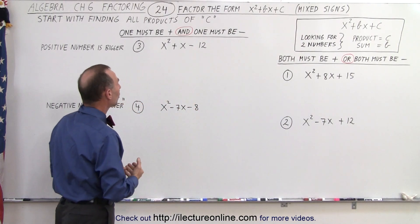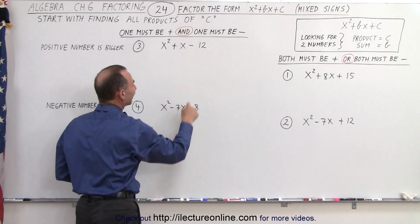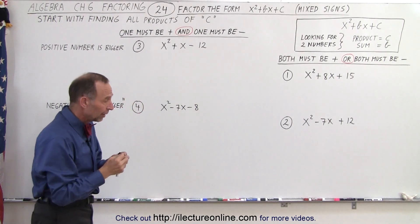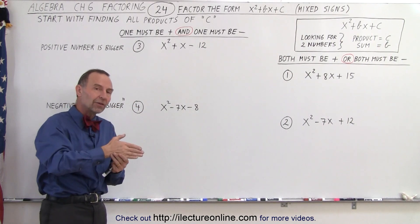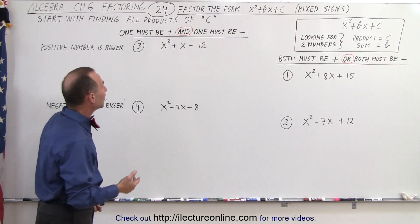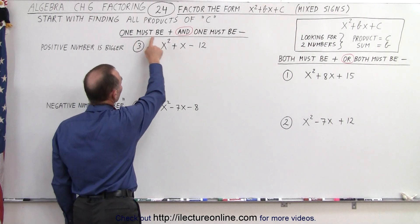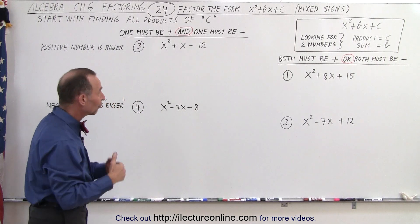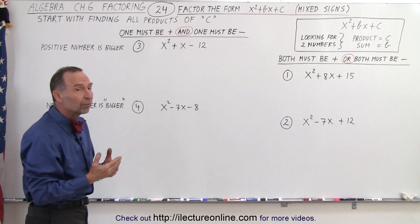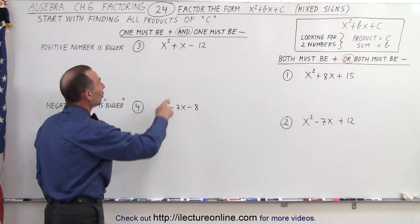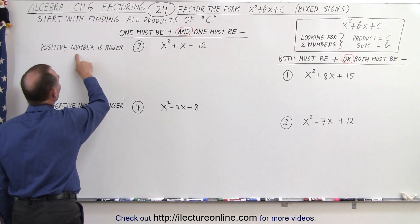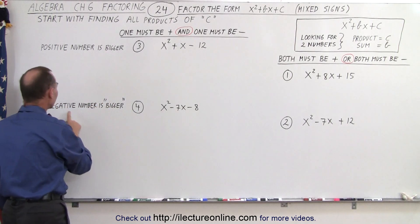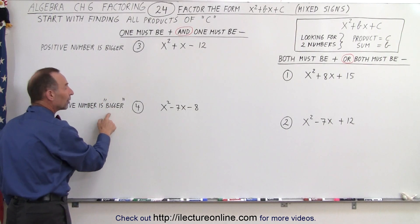Then we have the other two cases where the third term is negative. When we multiply two numbers together and get a negative result, that means one number must be positive and one number must be negative. Now, what determines which one is positive and which one is negative? When the middle term is positive, then the positive number is the bigger of the two.